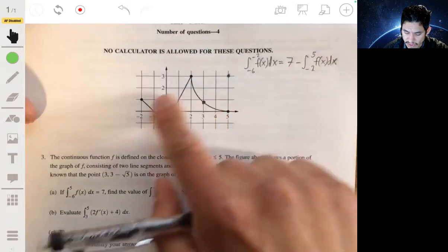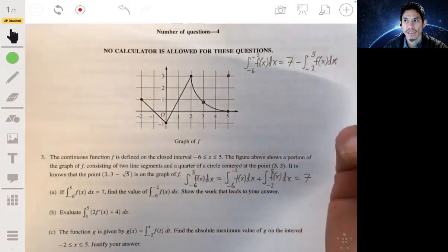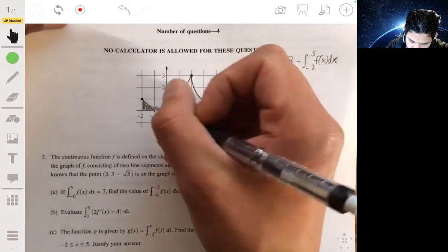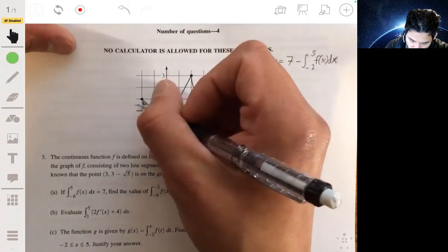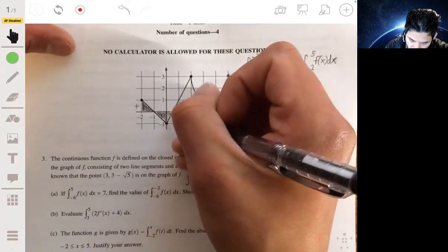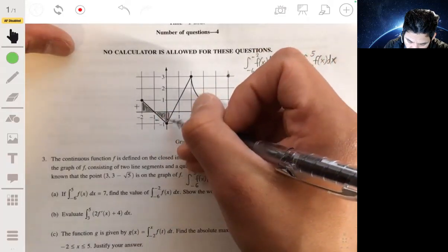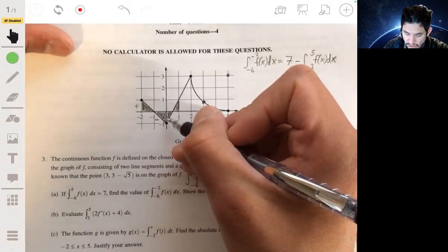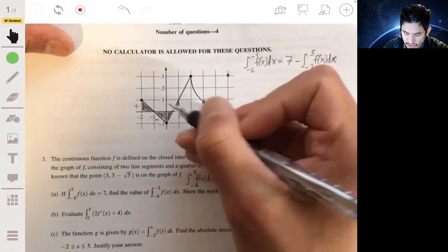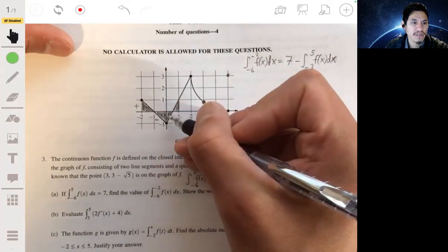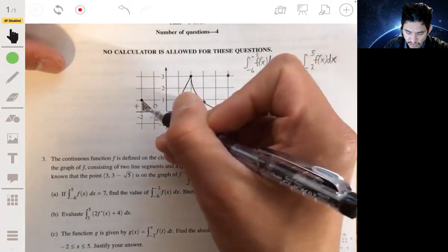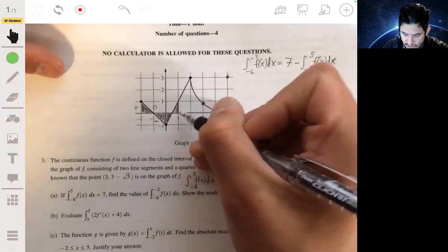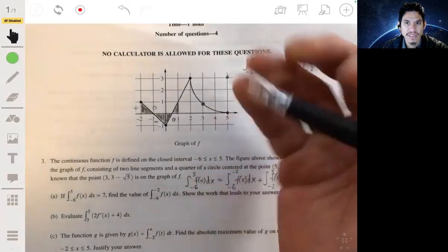So let's find what the integral from negative 2 to 5 is here. Now, remember, the integral you can essentially interpret as the area between the function and the x-axis. Anytime the area is above, it'll be a positive quantity. Anytime the area is below, it's a negative quantity. So if you see the shaded region from here to here, then these two triangles—let's first focus on these two, because if you notice, these two triangles are the same triangle but just flip. So these two triangles cancel out.